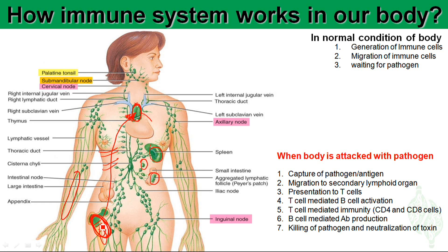Only T cells go to the thymus for their maturation. All other cells come from the bone marrow into the circulation, and from the circulation they migrate to the secondary lymphoid organs such as the spleen, lymph nodes, and Peyer's patches. They migrate from the primary lymphoid organ to the secondary lymphoid organ.